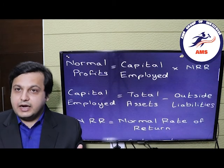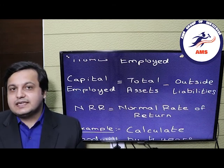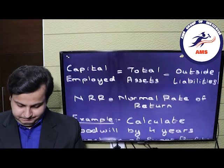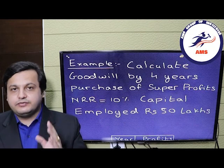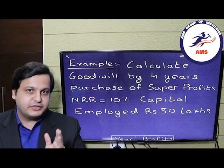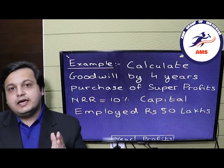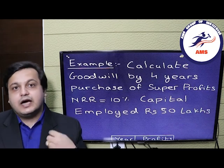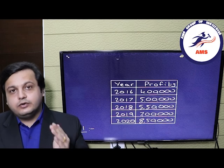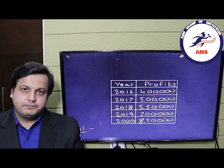NRR is the normal rate of return which the overall industry earns in its business. Now let's take a sum to understand how to value goodwill using the super profit method. We have to calculate goodwill using 4 years purchase — whatever the super profits are, we multiply by the number of years purchase, which is 4. The NRR is given as 10% and the capital employed by the firm is 50 lakh rupees. We are also given a table showing the overall profits of our company for the past five years, which we will use to calculate the average profit.